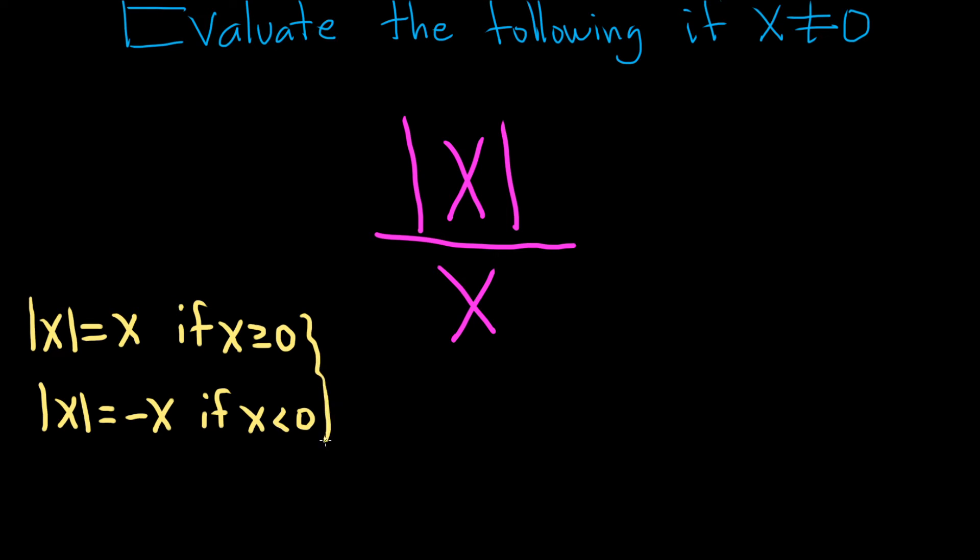So in this problem, we're actually going to get two answers. Let's do each one individually. If x is greater than or equal to 0, then the top piece, the absolute value of x, is going to become x. So we get x over x, which equals 1.